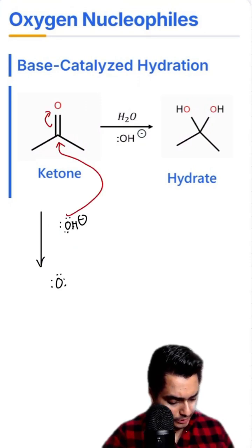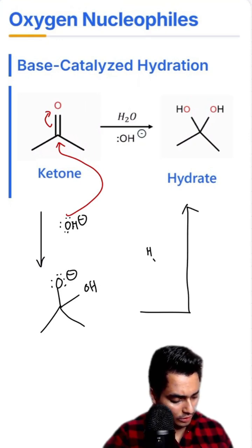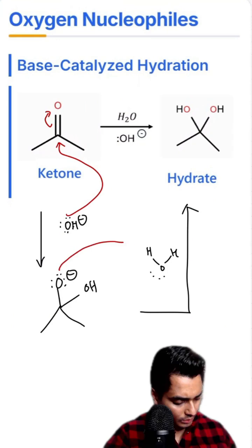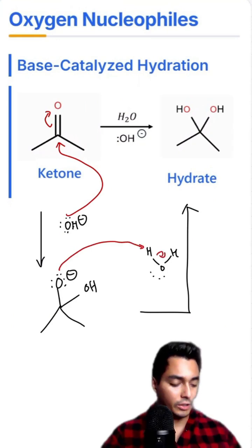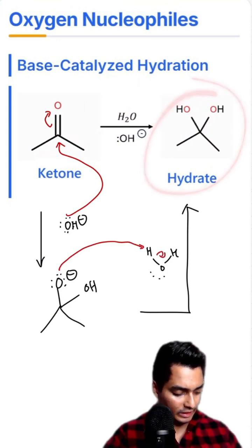We now have an O minus charge and an OH group. The second step is to take our water to protonate that minus oxygen. It's going to attack here, thereby creating our first product, the hydrate.